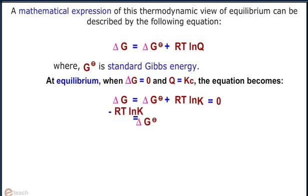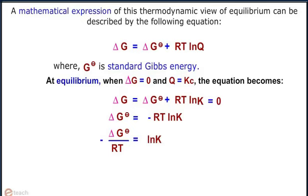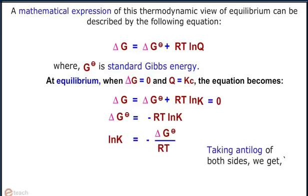This implies that delta G° equals minus RT ln K. On simplifying we get ln K equals minus delta G° upon RT.